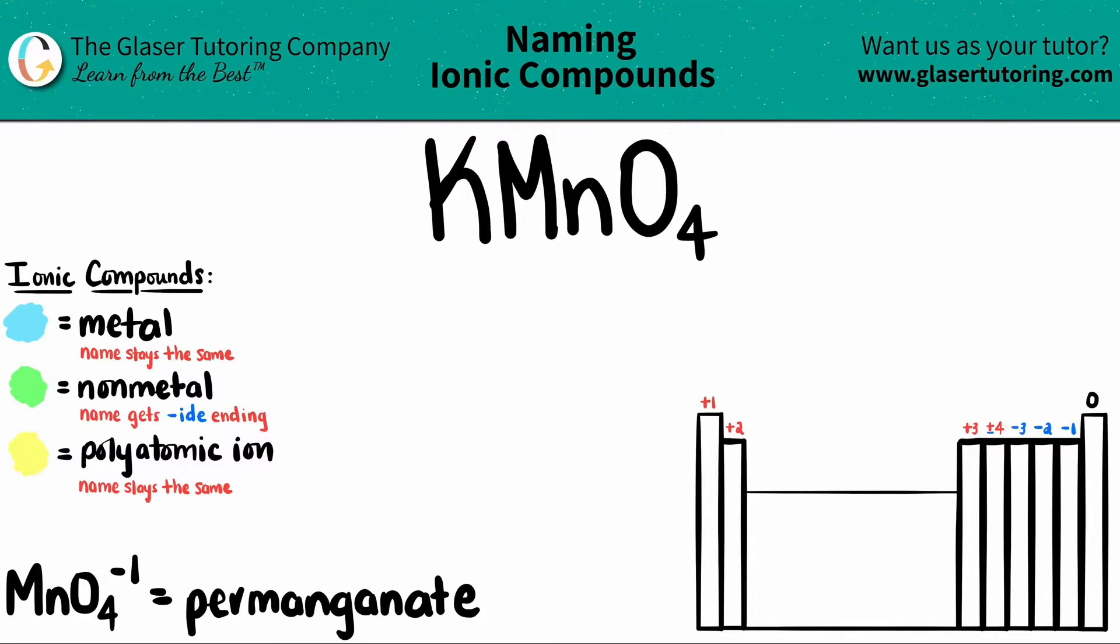Now, here's a little trick. If you notice that your ionic compound has three or more different elements, you know that you have at least one polyatomic ion somewhere in your compound. In this case, we do have three different elements.